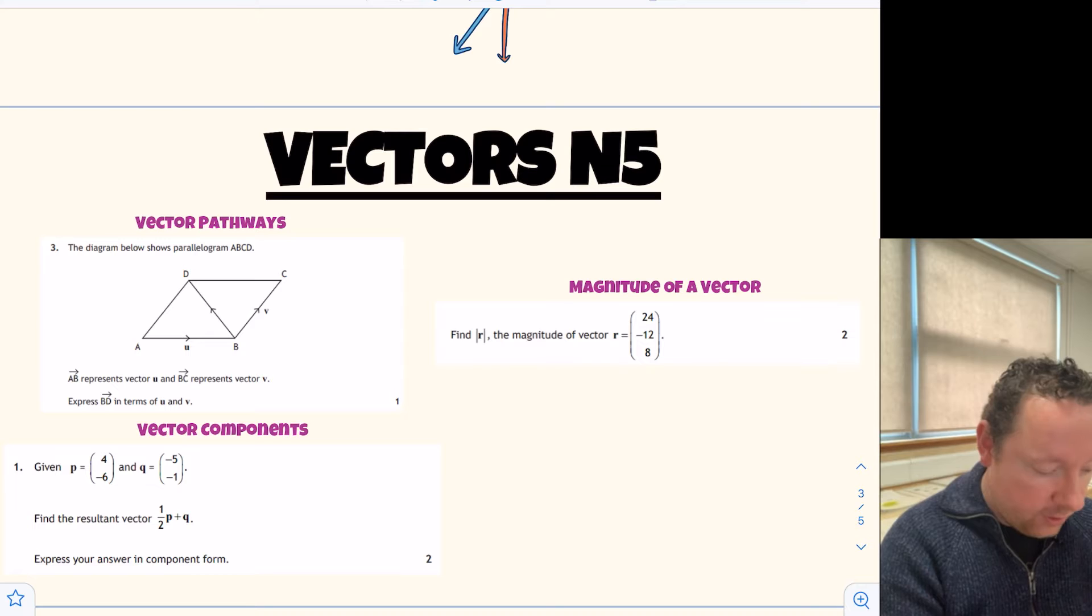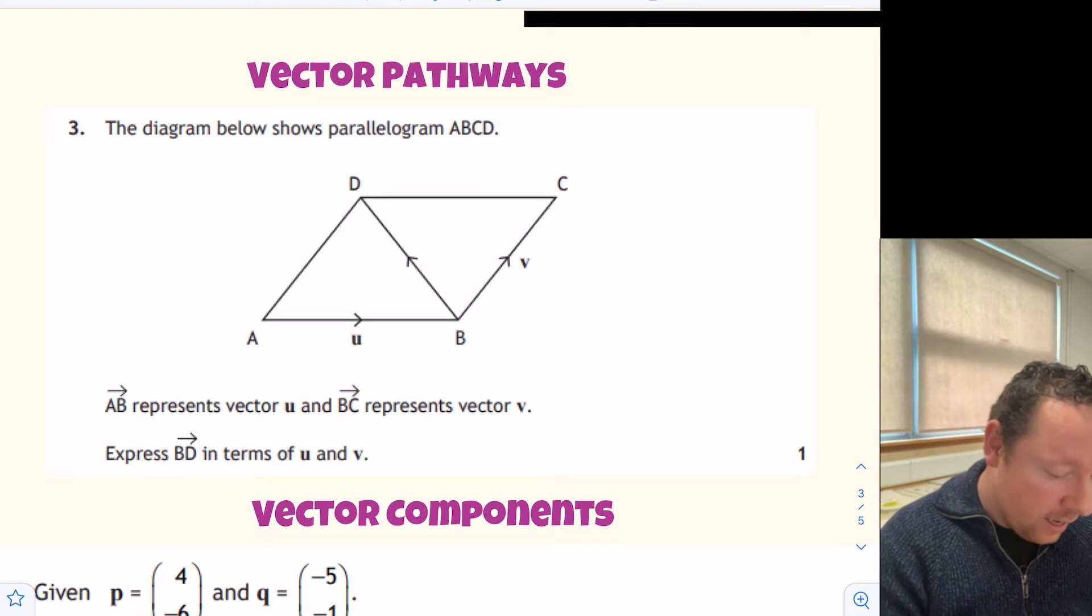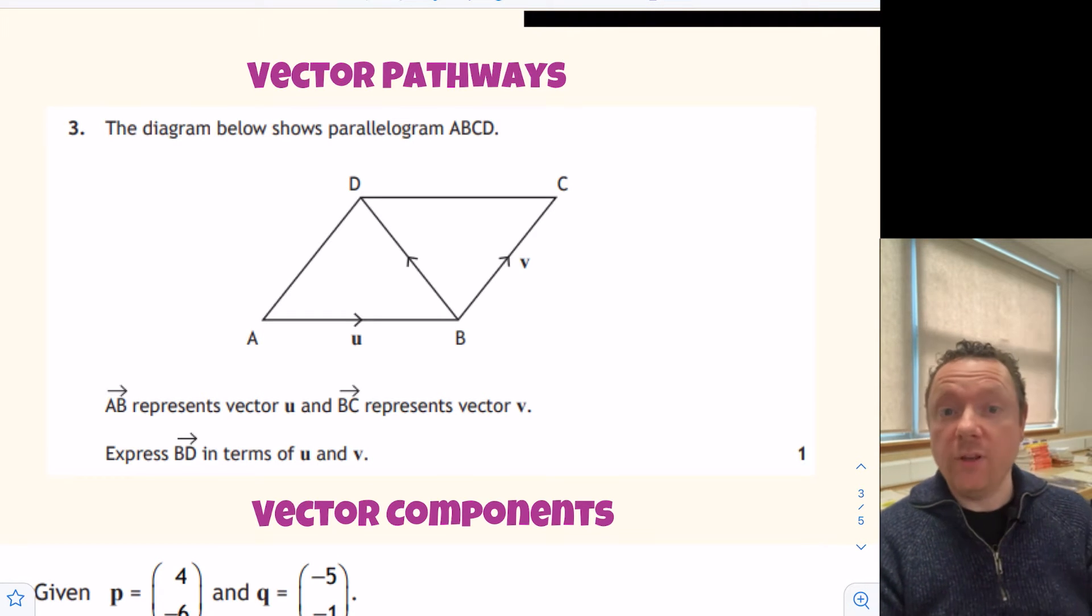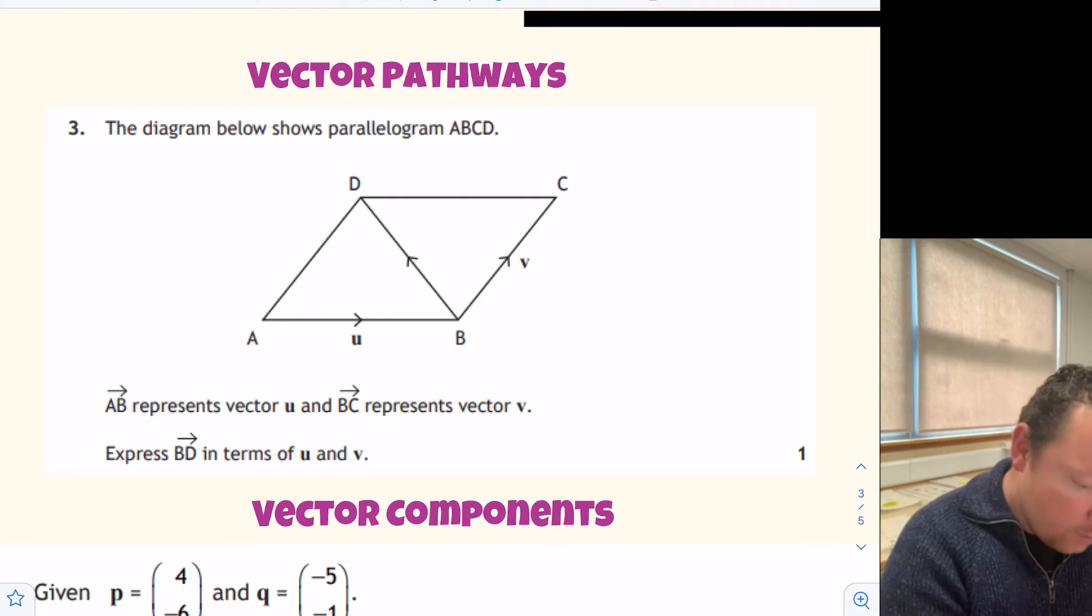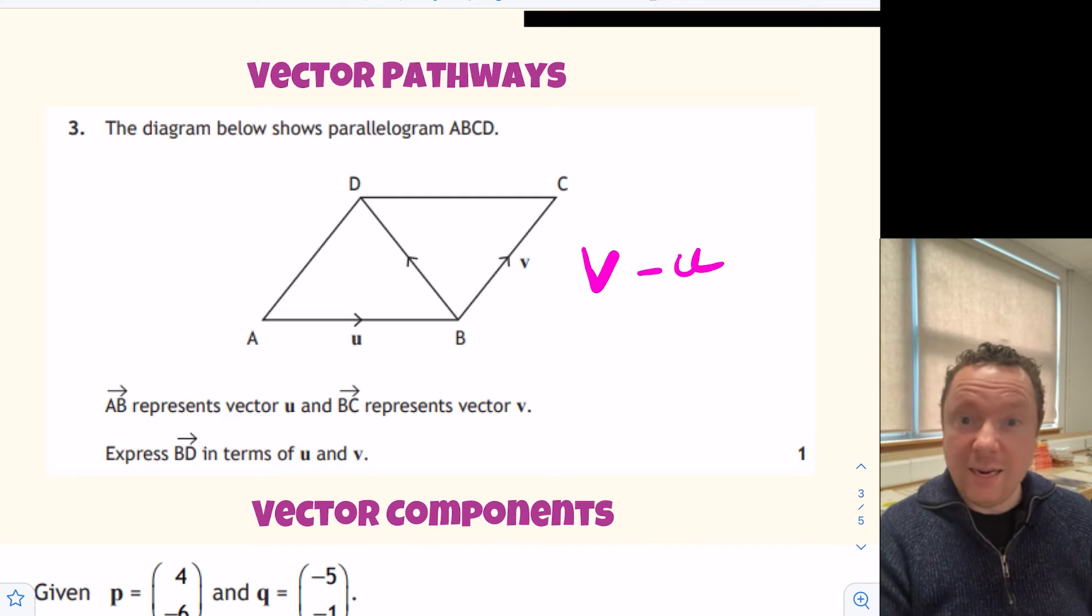But the stuff you need to know from Nat 5 briefly is something called Vector Pathways. So if we take this past paper question, the diagram shows parallelogram ABCD and it says AB is represented by U as shown and BC is V, express BD in terms of U and V. I'll briefly go over this but you'll need a much more in-depth video to actually learn this properly. But we're going from A to B as U and B to C as V and I want to get to B to D. Now B to D is along here, I don't know what that is but you can take any path you want to get there. So I'm going to start at B, if I go along to C I went along V so I've got V and then from C I'm going to go back to D. Now that's the same size as this one so it's just U but I'm going backwards so it's minus U. So it's just V minus U.